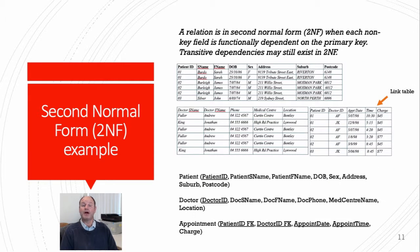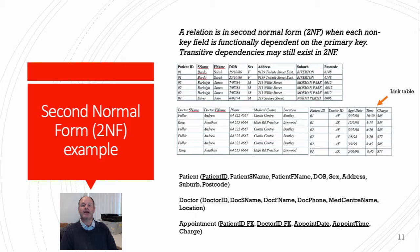We now need to turn our first normal form table into a second normal form table. The 2NF rule: a relation is in second normal form when each non-key field is functionally dependent on the primary key. Transitive dependencies may still exist in 2NF. We have converted our single table into three tables: one for patient details, a second for appointments, and a third for doctor details. So all of the attributes are now functionally dependent on their primary key.